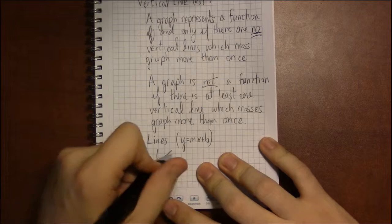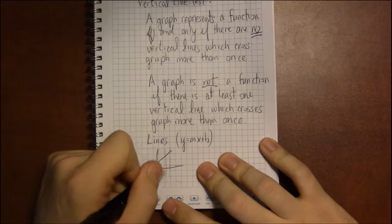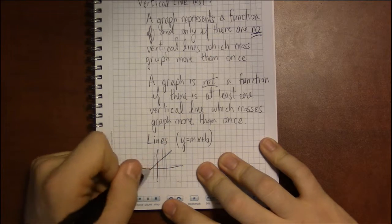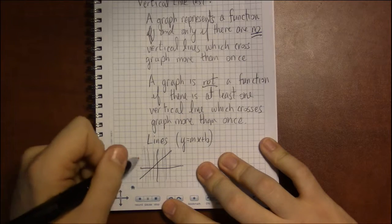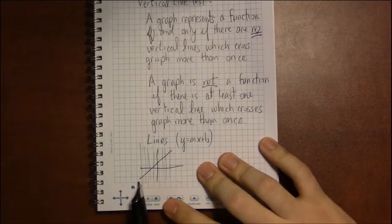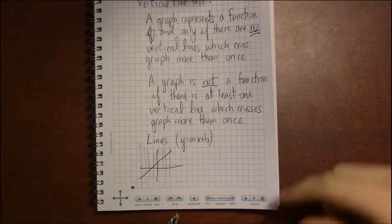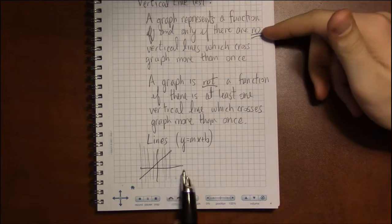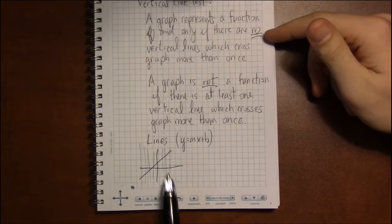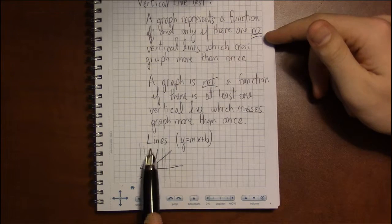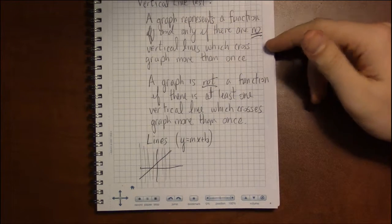But each vertical line that I could possibly draw on this graph crosses the line at exactly one point, and therefore there are no vertical lines which cross the graph at two or more points. So this is a function.